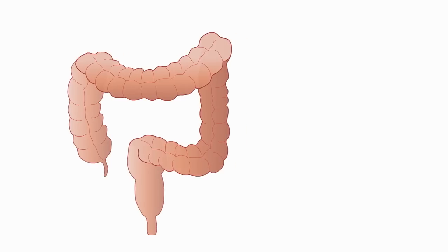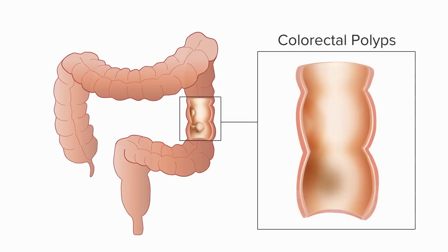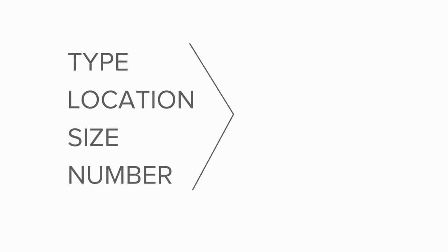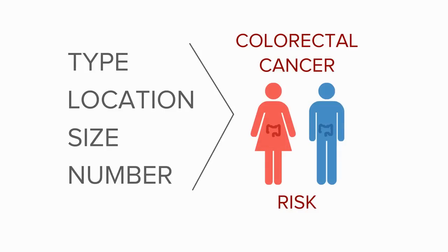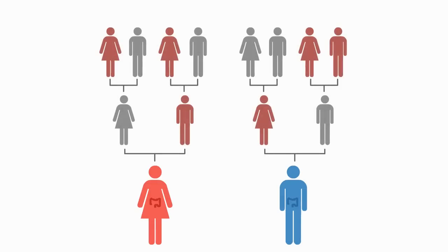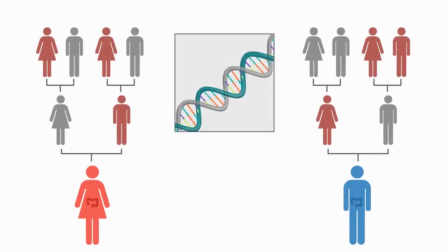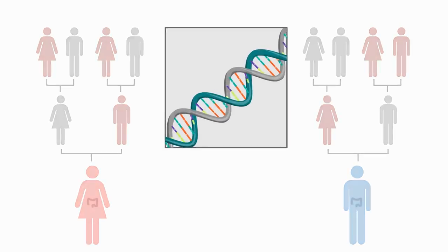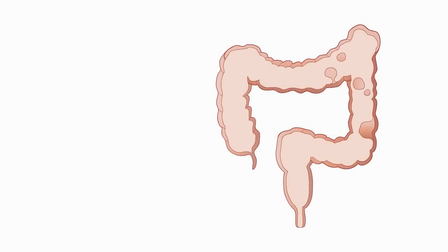Colorectal cancer typically develops from colorectal polyps, which are abnormal growths that develop silently inside the colon or rectum. Although most polyps will not become cancerous, some may develop into cancer. Type, location, size, and the number of polyps are related to the risk of developing colorectal cancer. Individuals with a family history of polyps may also be at higher genetic risk for developing polyps, and therefore at higher risk for colorectal cancer.